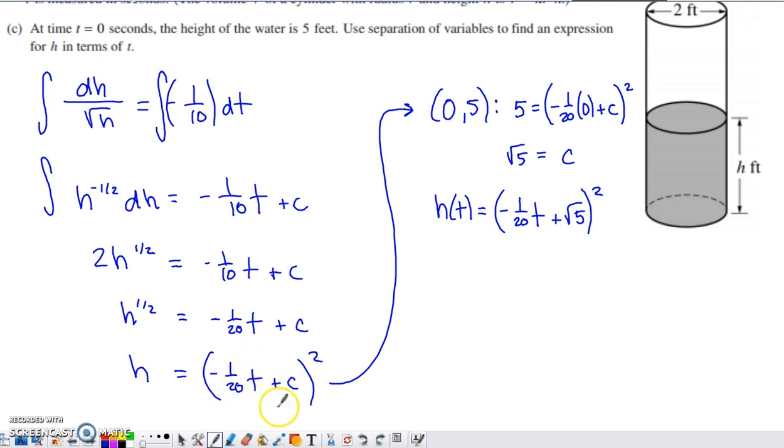Here is the general solution. If I want the specific solution, I can go ahead and apply the condition they give us, which is at time 0, the height is 5. So 5 goes in for h, 0 goes in for t. Inside this set of parentheses, really all I have is a c. So 5 equals c squared, therefore c is going to equal the square root of 5. And here's my function for h of t.